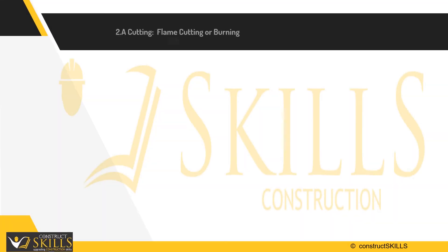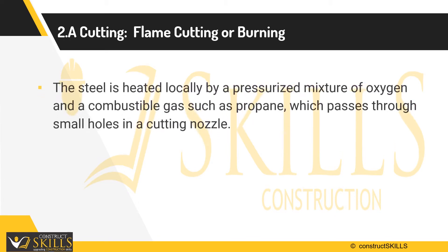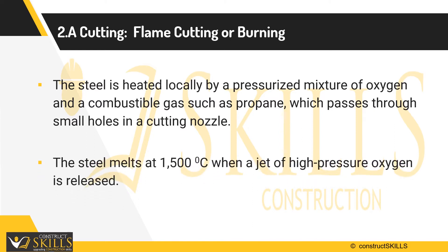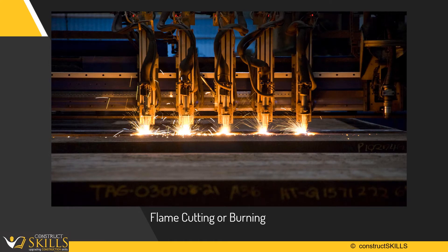The flame cutting method involves cutting of sections as required by using a flame. In this, steel is heated locally by a pressurized mixture of oxygen and a combustible gas such as propane, which passes through small holes in a cutting nozzle. The steel melts at 1500 degrees Celsius when a jet of high pressure oxygen is introduced to it. This method is advantageous as no power supplies are needed and it is portable. The figure shows a steel bar being cut by high pressurized gas.